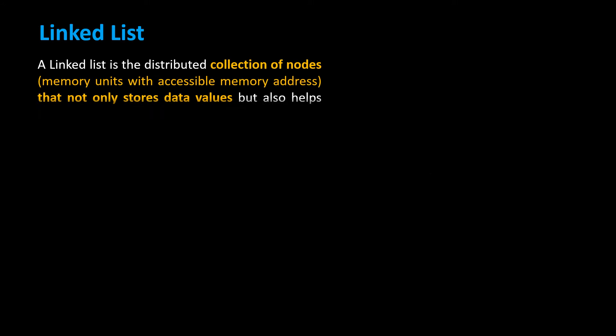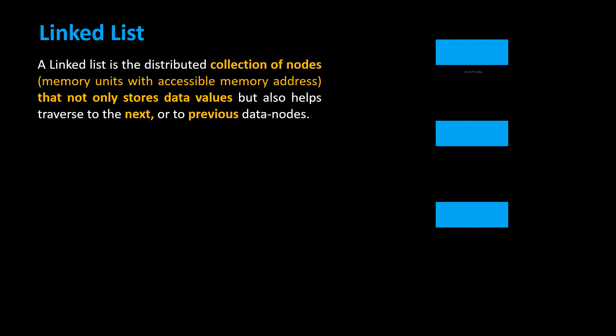A linked list is the distributed collection of nodes, which are memory units with accessible memory addresses that not only store data values but also help traverse to the next or to the previous data nodes.